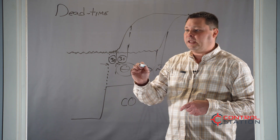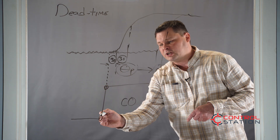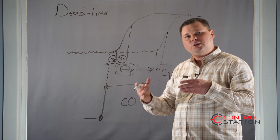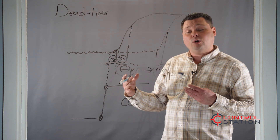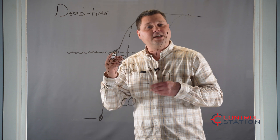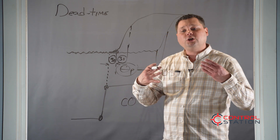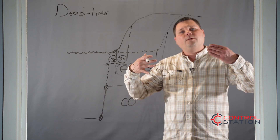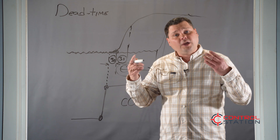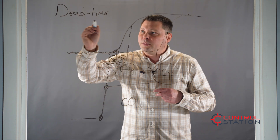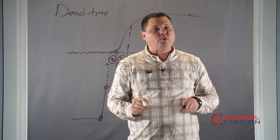So the dead time is related to the delay of the system. You measure from the time the controller output is changed — either the time you start the change or when it completes, just be consistent. You read the time off your process where it actually started to show a response, and you look at the difference. If it takes three seconds or five seconds, that's your dead time — it is the delay of the loop. The larger your dead time is relative to your process time constant, the more difficult tight, fast control becomes. Thank you for joining me in today's episode. We talked about the process dead time and how it's the time it takes from when you move the output to the process variable response.